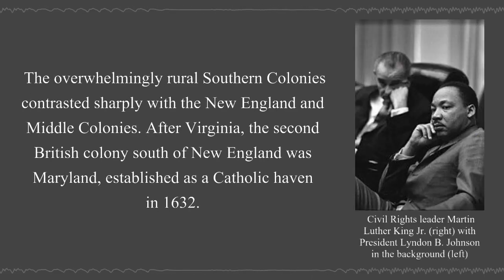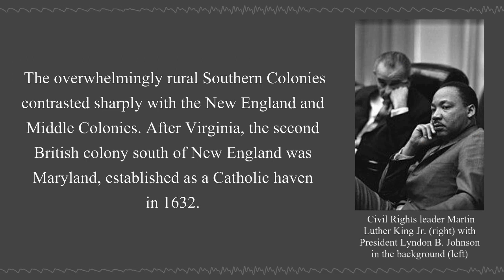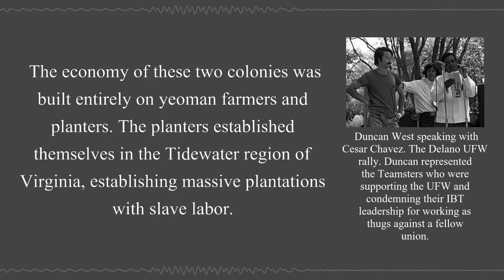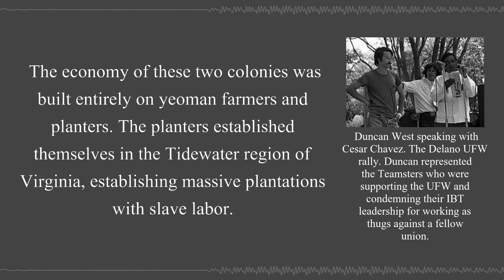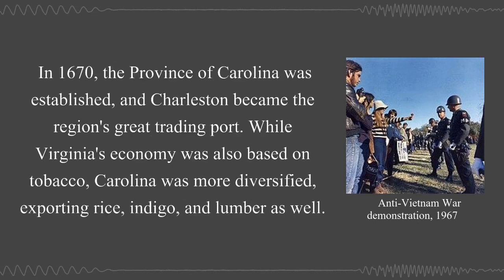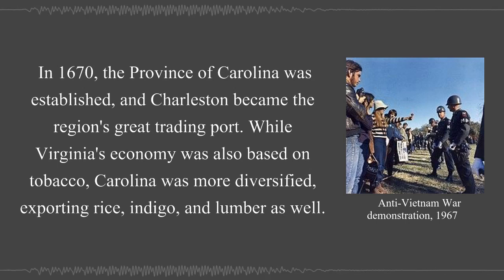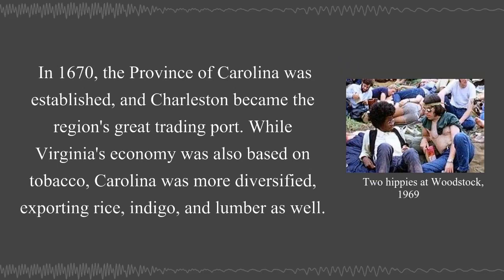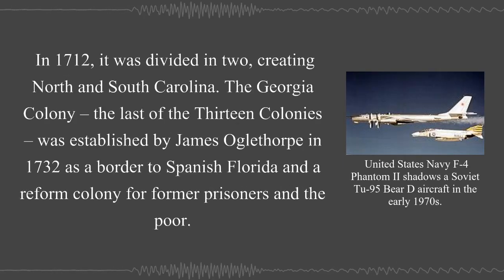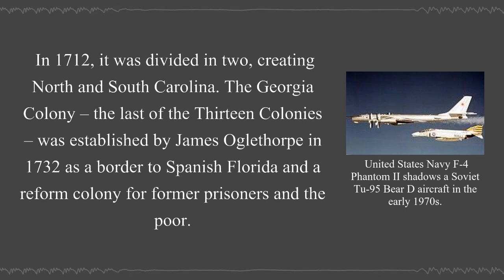The overwhelmingly rural southern colonies contrasted sharply with the New England and Middle colonies. After Virginia, the second British colony south of New England was Maryland, established as a Catholic haven in 1630. The economy of these two colonies was built entirely on yeoman farmers and planters. The planters established themselves in the Tidewater region of Virginia, establishing massive plantations with slave labor. In 1670, the province of Carolina was established, and Charleston became the region's great trading port. While Virginia's economy was also based on tobacco, Carolina was more diversified, exporting rice, indigo, and lumber as well. In 1712, it was divided in two, creating North and South Carolina.